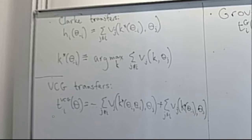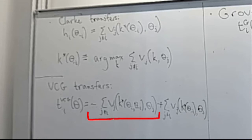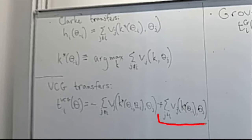It's reasonable that the sum of vj's from this almost-efficient allocation will be similar in magnitude and sign to that from k*(theta). If we plug this h_i(theta_{-i}) into the Groves transfers, we get what are called VCG transfers: the Groves term — the negative sum of vj's for all j ≠ i from k*(theta) — plus the sum of real utilities of all other agents from k*(theta_{-i}).